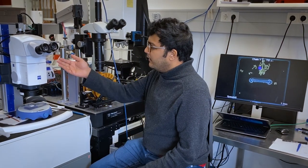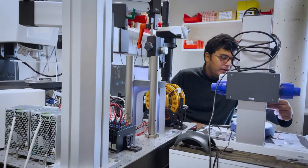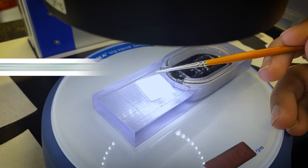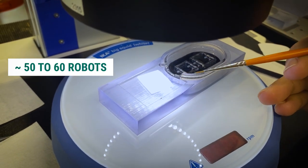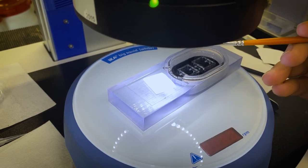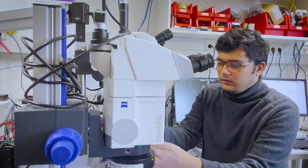So this here is the microscope under which we transfer our particles. On this white piece of Teflon, there are roughly about 50 to 60 robots. And then we use a paint brush like this to transfer them onto the water surface.